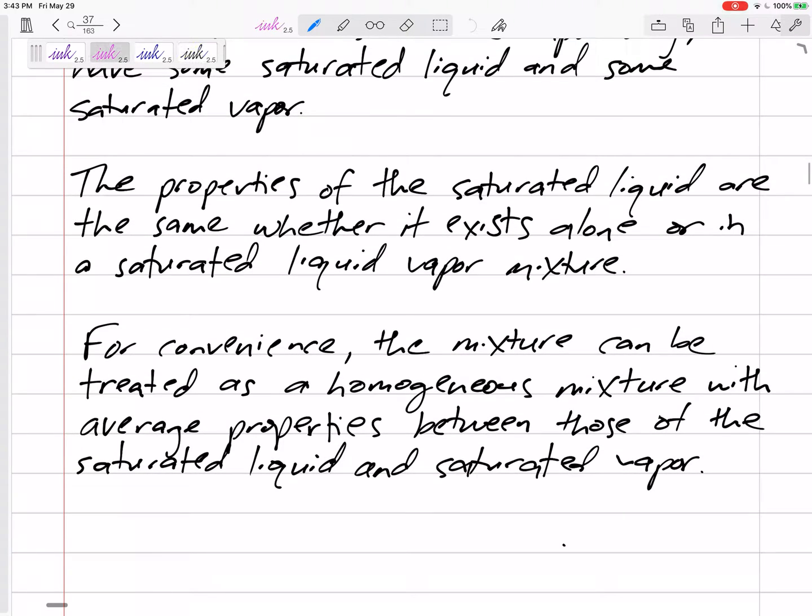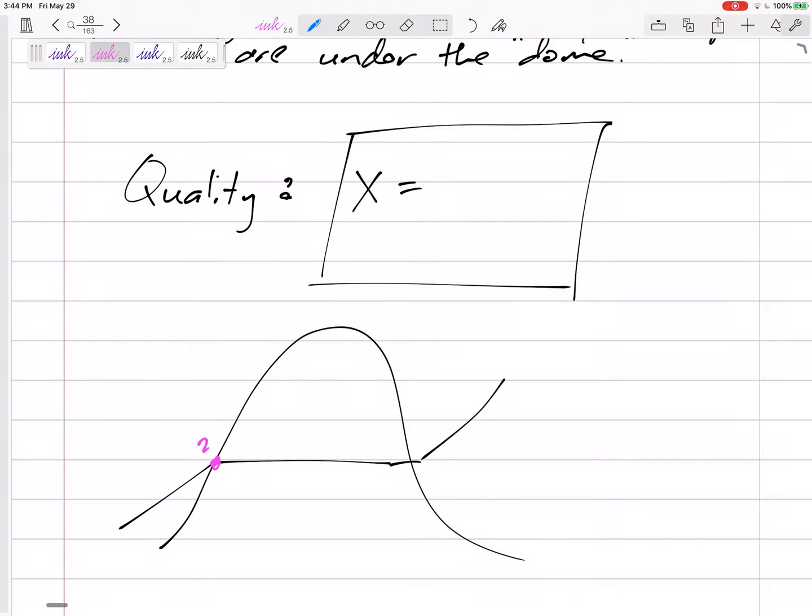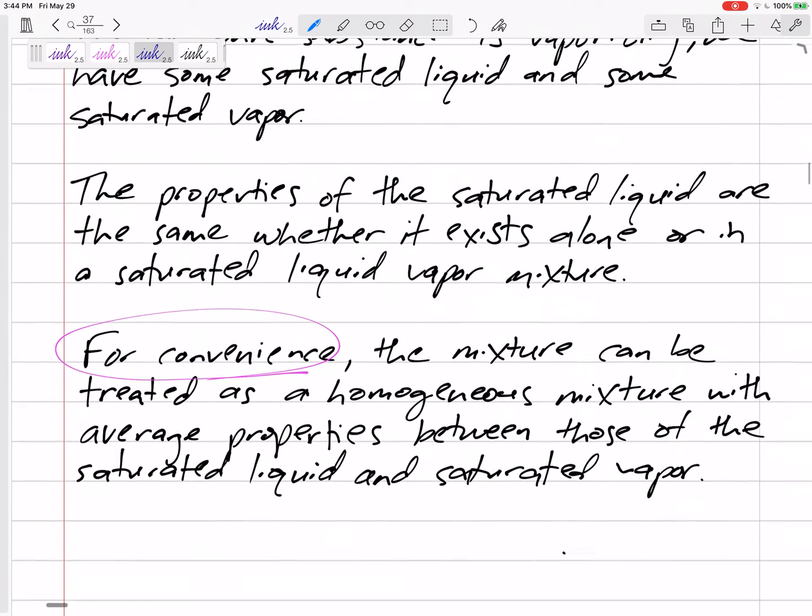But for convenience, we are going to assume that the mixture does slowly go from saturated liquid with its properties to a saturated vapor with its properties. So for convenience, we're going to find the average property.